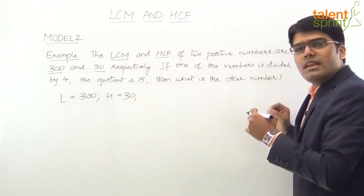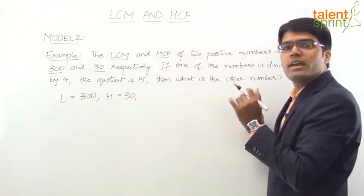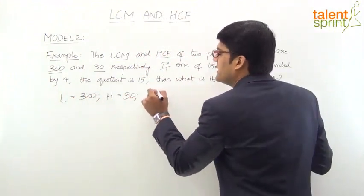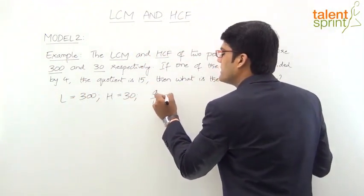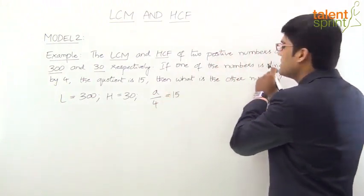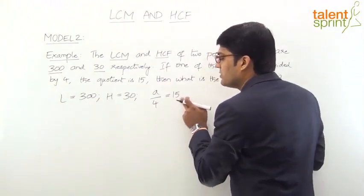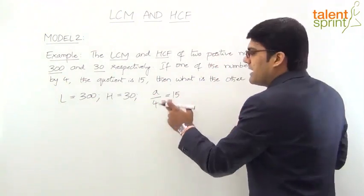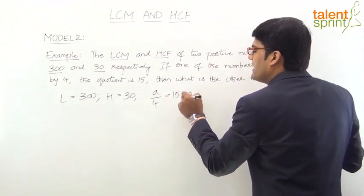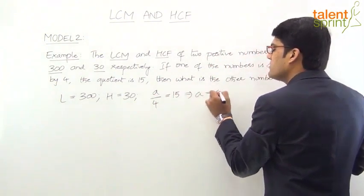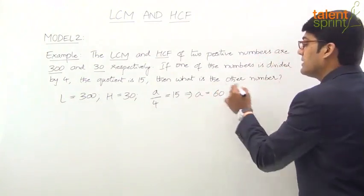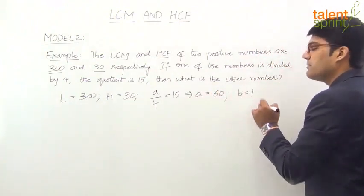Let's find the number that is divided by 4. If A divided by 4 equals 15, then A equals 15 times 4, which is 60. We need to find the other number, which we'll call B.